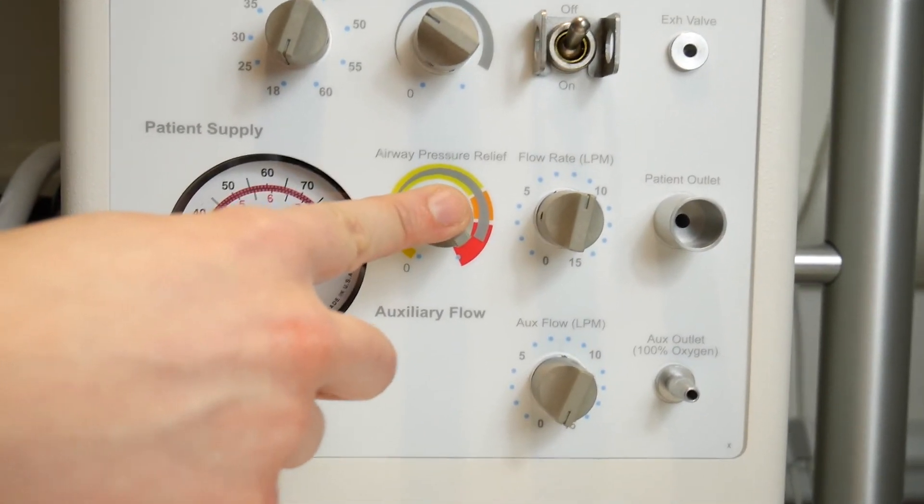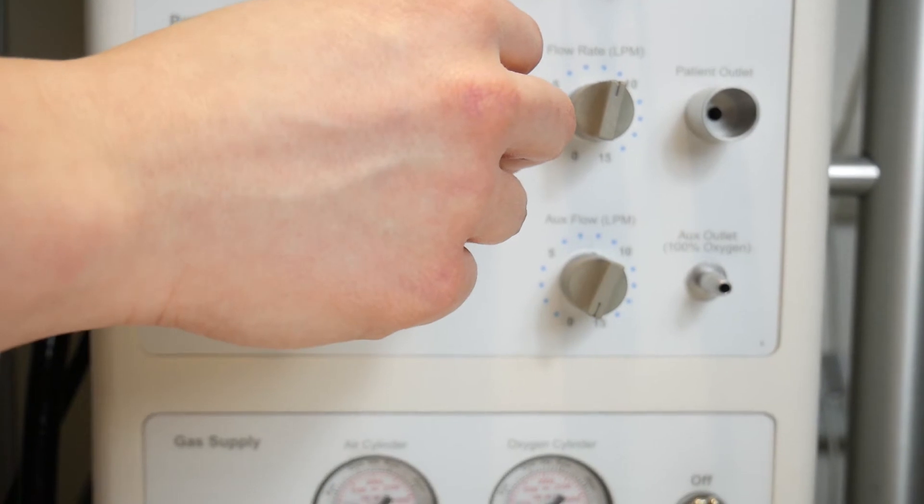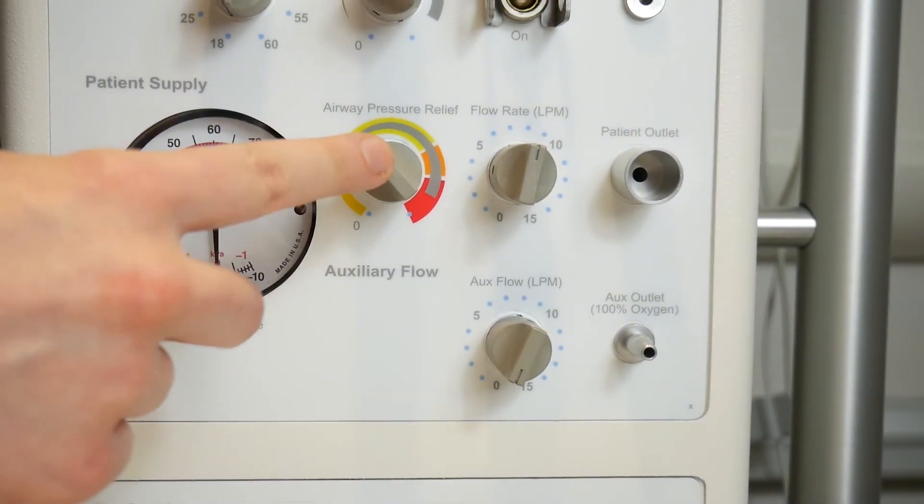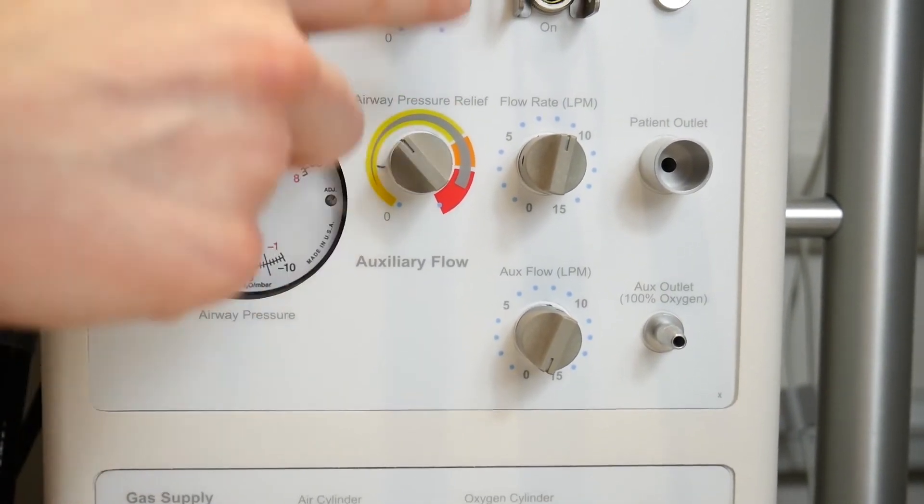This dial is the airway pressure relief or the peak inspiratory pressure. Most people like to set this at a maximum of 30 to begin with.